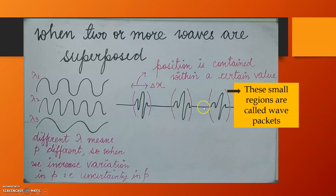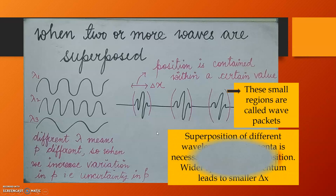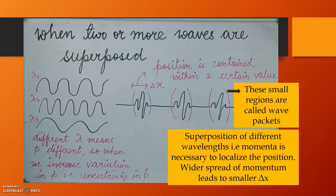If you look into this picture, it is as if within this wave packet, the position is to certain extent certain. Whereas, in these positions, there is no position at all, which means the wave is completely absent in these places. So, what we have actually received? By superposition of different wavelengths, that is momenta, we have localized the position. And, wider the spread of this momentum, smaller is the localization. Smaller is the uncertainty in X.